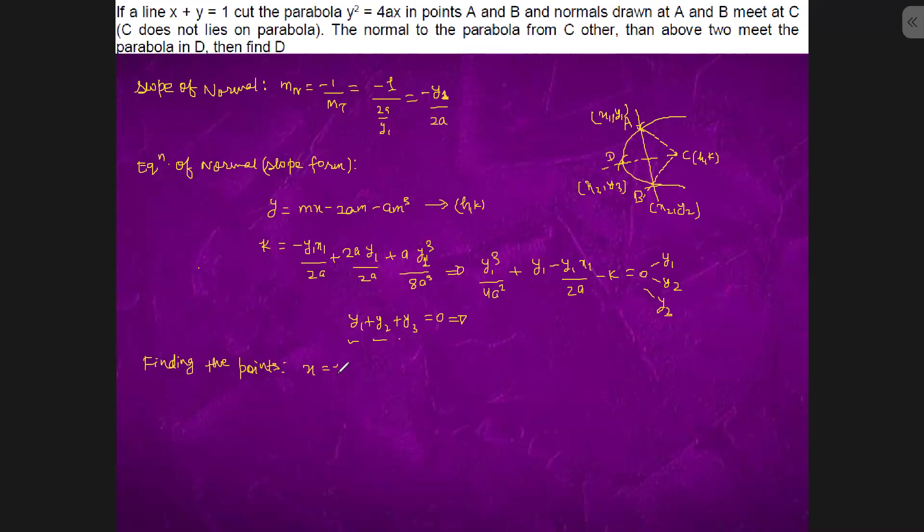x equals to 1 minus y, so we will put on parabola. Parabola y² equals to 4a(1 minus y), which is what? y² plus 4ay minus 4a equals to 0. So y1 and y2 are lying on this, so y1 and y2 is minus 4a.